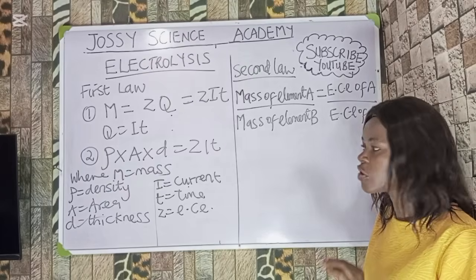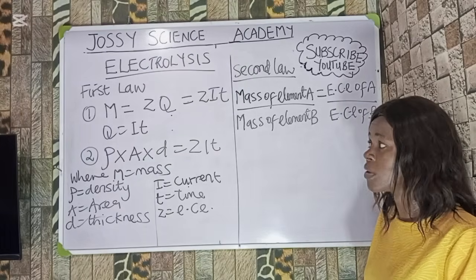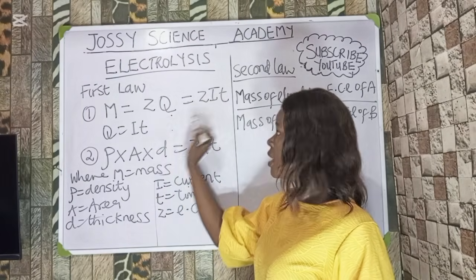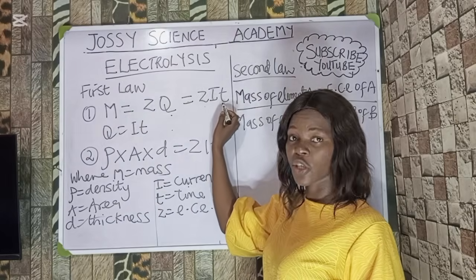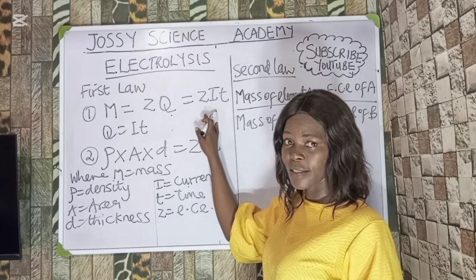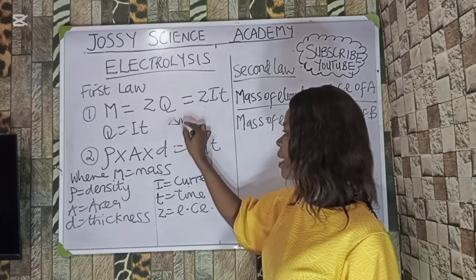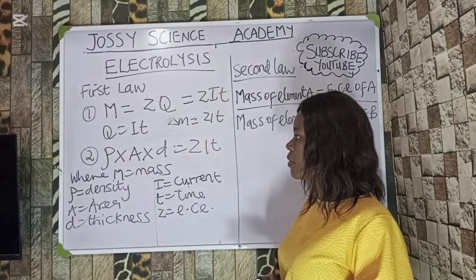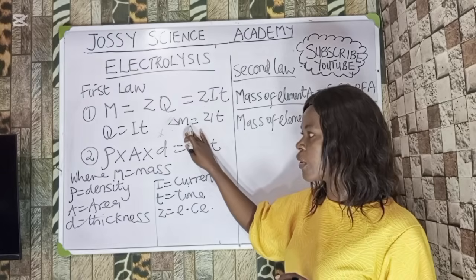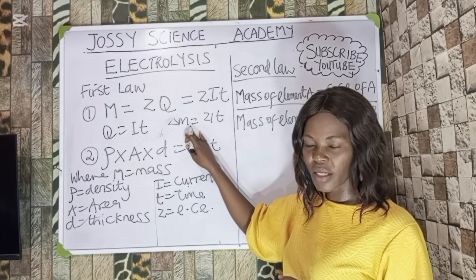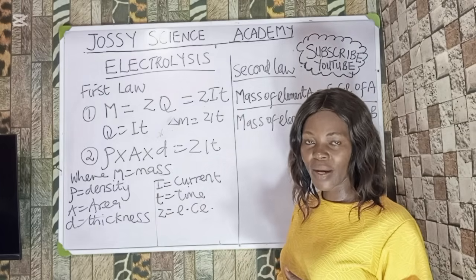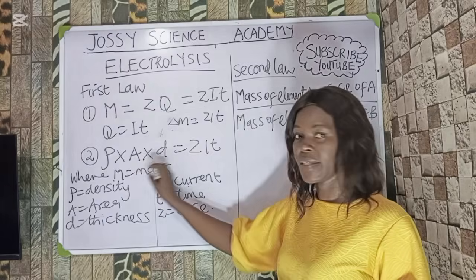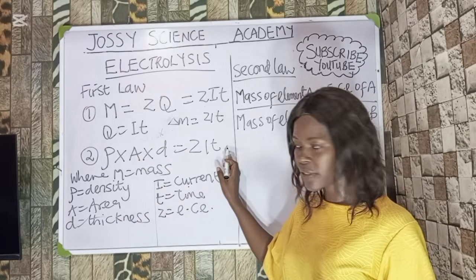For electrolysis, all calculations come from the first law: M equals Z·Q, where Q is the quantity of charge equal to current multiplied by time, so M equals Z·I·t. A difference in mass is also equal to Z·I·t. If you are given density, area, and thickness instead of mass, use: density × area × thickness equals Z·I·t.